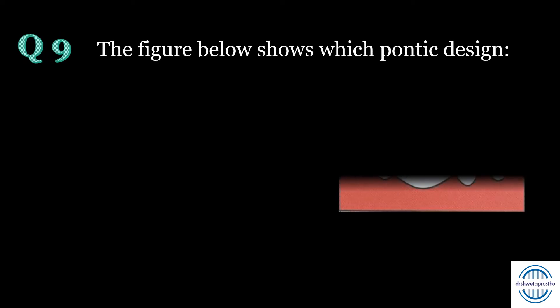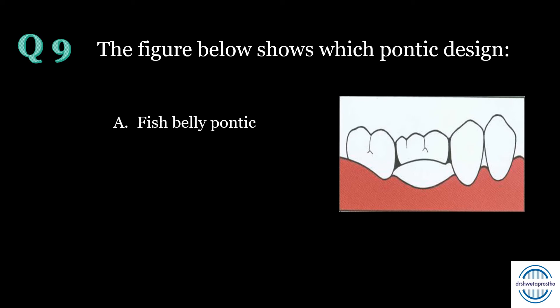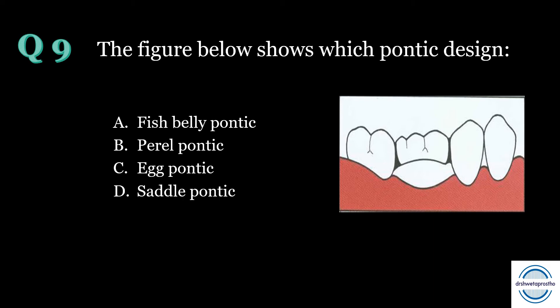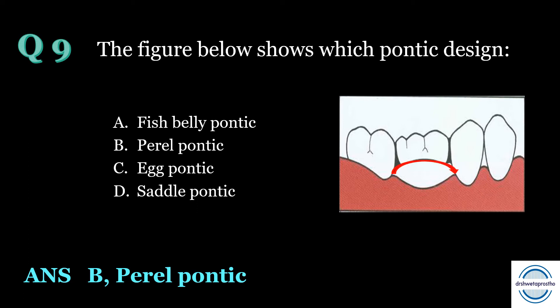Question number nine: The figure shows which pontic design? A) fish belly pontic, B) peril pontic, C) egg pontic, or D) saddle pontic? The answer is B — peril pontic. The peril pontic is another name for the modified sanitary pontic or arch fixed partial denture. Its gingival surface is concave mesiodistally and convex faciolingually, giving the tissue surface of the pontic a hyperbolic paraboloid shape.